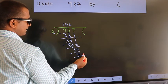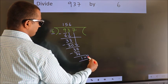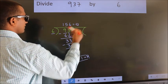No more numbers to bring it down. So, we stop here. This is our remainder. This is our quotient.